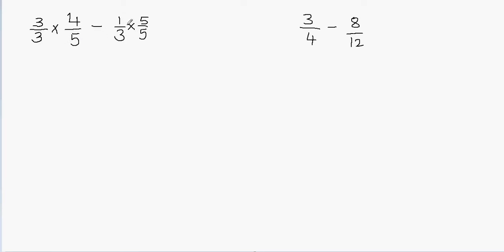So this fraction gets multiplied by 5 and this one by 3. We always have to remember: whatever you multiply in the denominator, you must do the same in the numerator. For example, 3 divided by 3 equals 1, and 4/5 times 1 is still 4/5 — so we are not changing the value of the fraction. We are just trying to make the denominators equal.